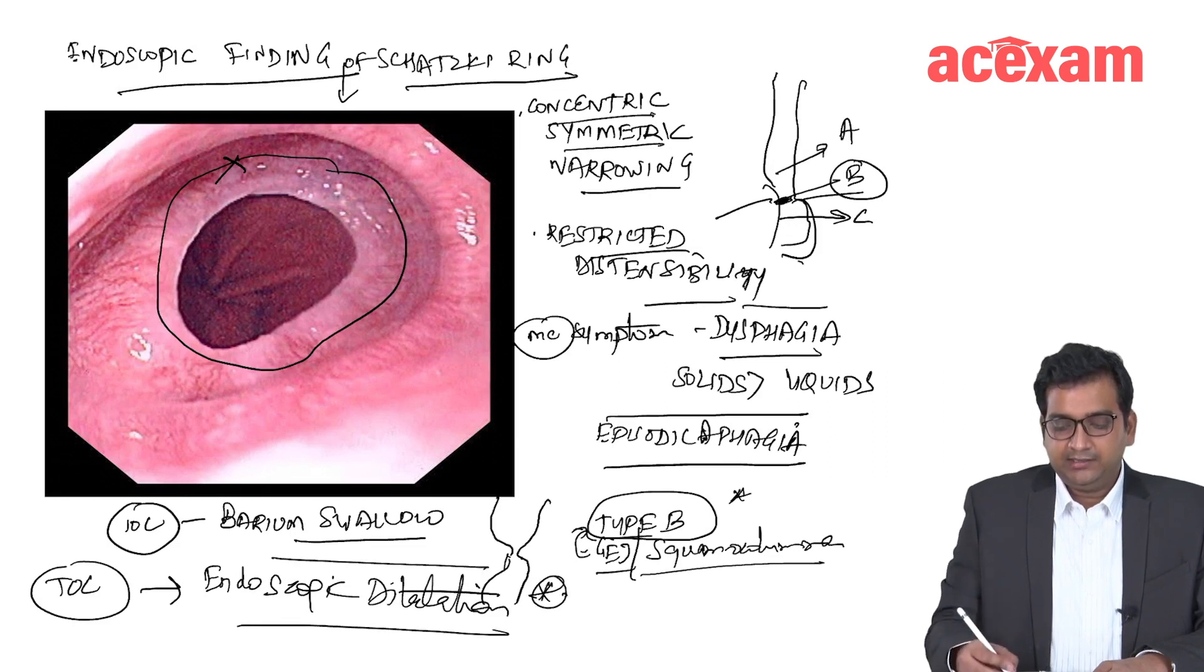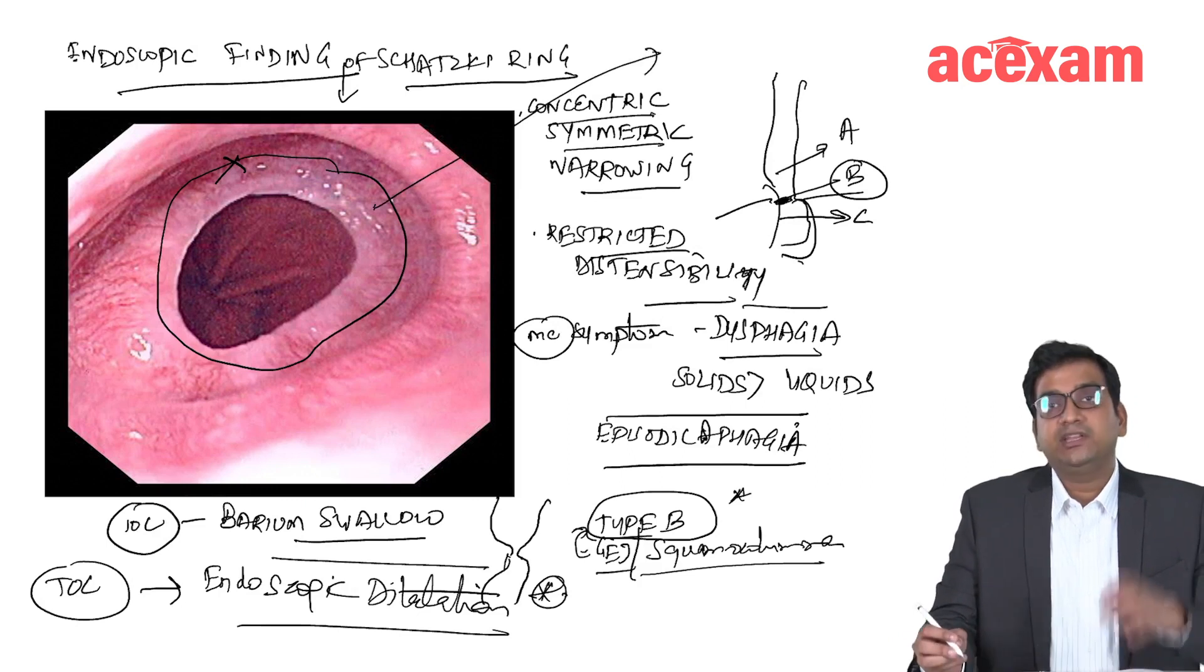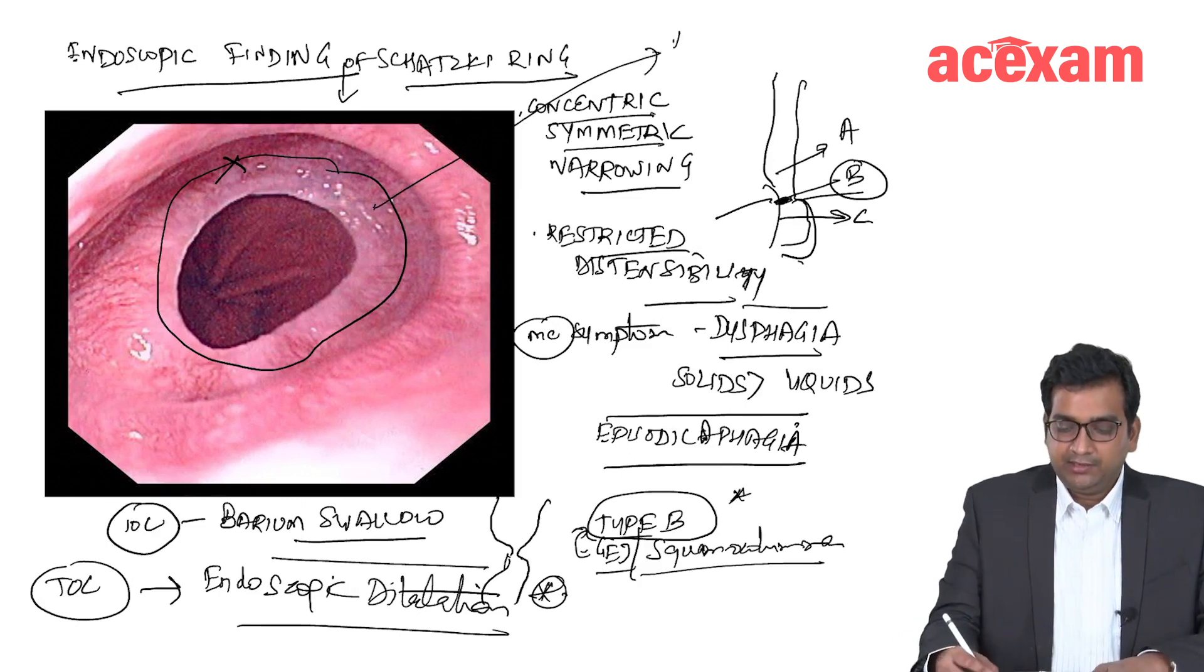And this ring is composed of mucosa and submucosa. It is not a full thickness of fascial tissue. This ring is composed of mucosa and submucosa.